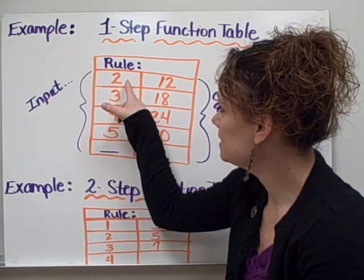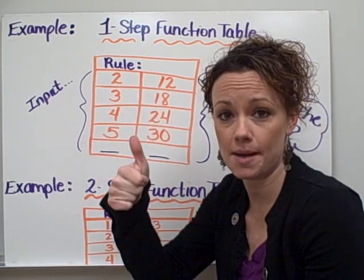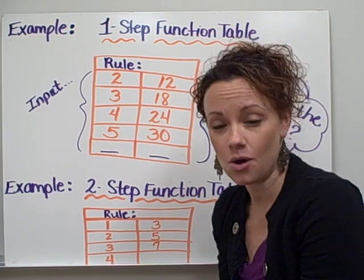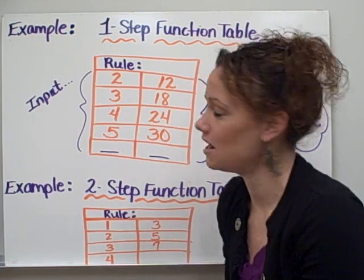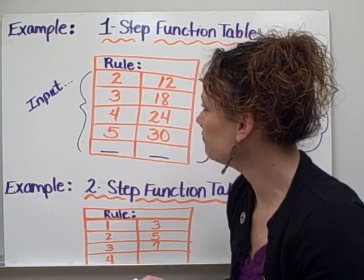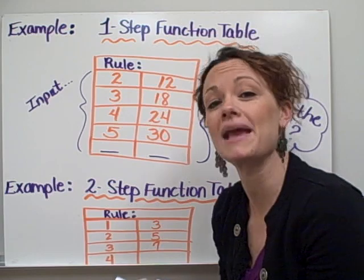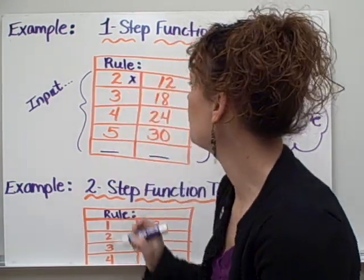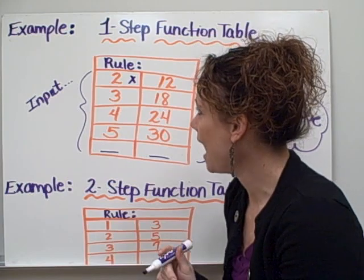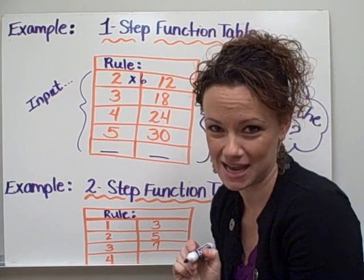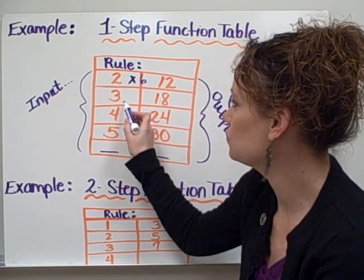Now we notice that to get from two to twelve we have to go up. And to get up mathematically you're either doing addition or multiplication most of the time. So for this instance I'm going to choose multiplication. And I'm going to ask myself what do you have to do to two to make it twelve using multiplication. And I know that to get from two to twelve I have to multiply by six. So I'm going to go ahead and make a little note of that on my function table. Now we move on to the next row.